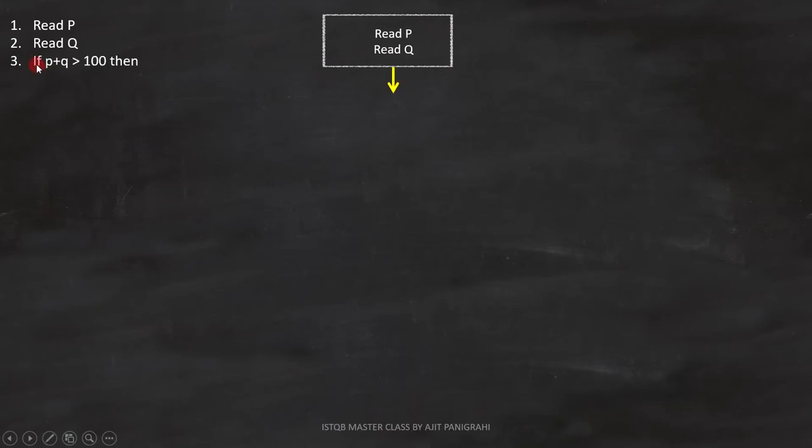Line 3 is if P plus Q is greater than 100. Since it is a condition, we have to represent it like this. If this condition is true, line number 4, print large will execute. Since it is a statement, we can represent it like this.